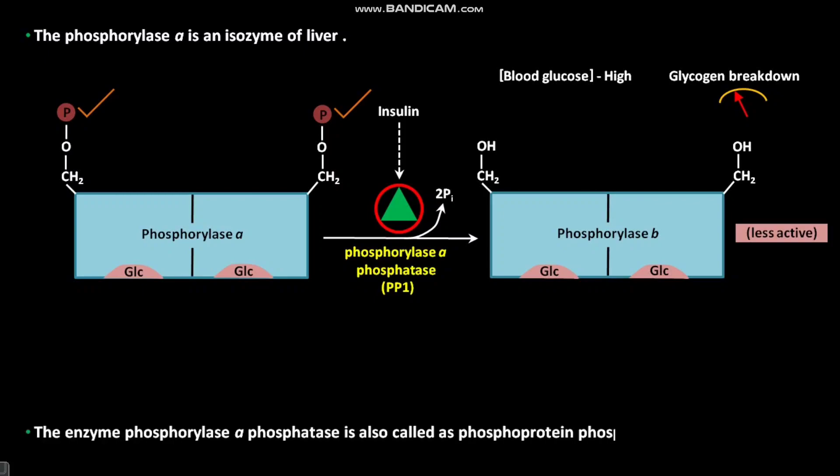The enzyme Phosphorylase A phosphatase is also called Phosphoprotein Phosphatase 1, or PP1.